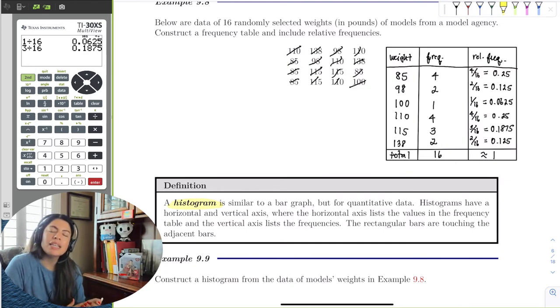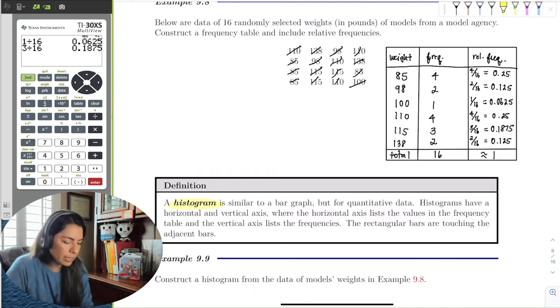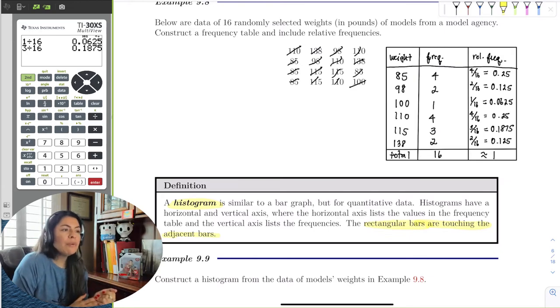So a histogram is going to be essentially a bar chart, but for quantitative data. The reason why it's called something different is because in math, when it looks different, it is different. And so if the data looks different, then the bar chart will look different. And the difference will be that the bars will be touching. So we're going to have the bars touch.